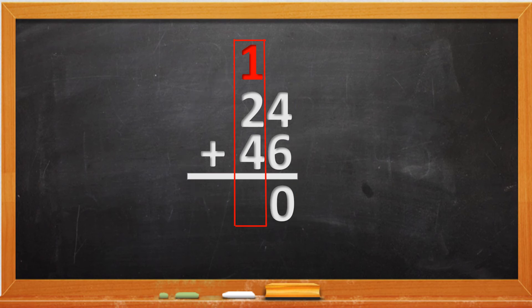Now we add the left column and we're going to add 3 numbers. We're going to add 1 plus 2 plus 4 and the answer will be 7. So 24 plus 46 will equal 70.